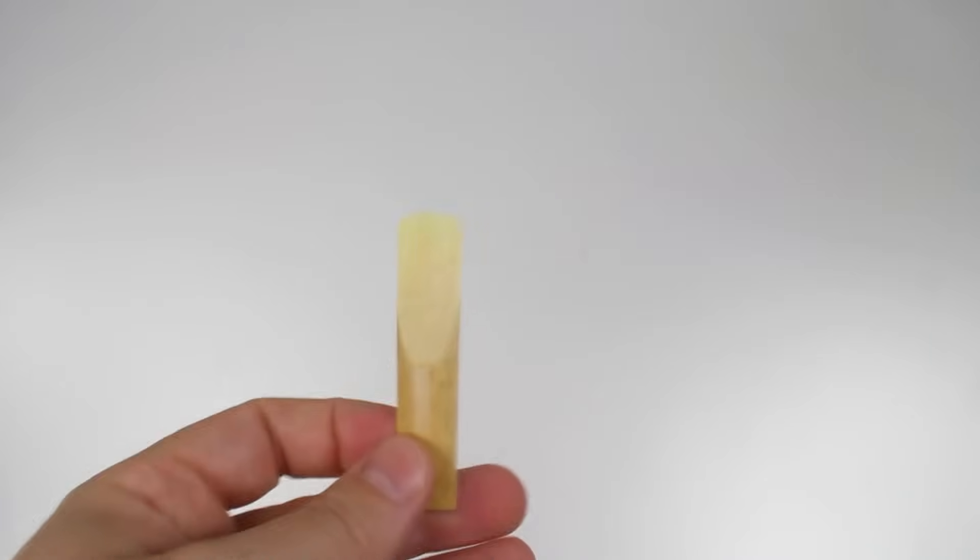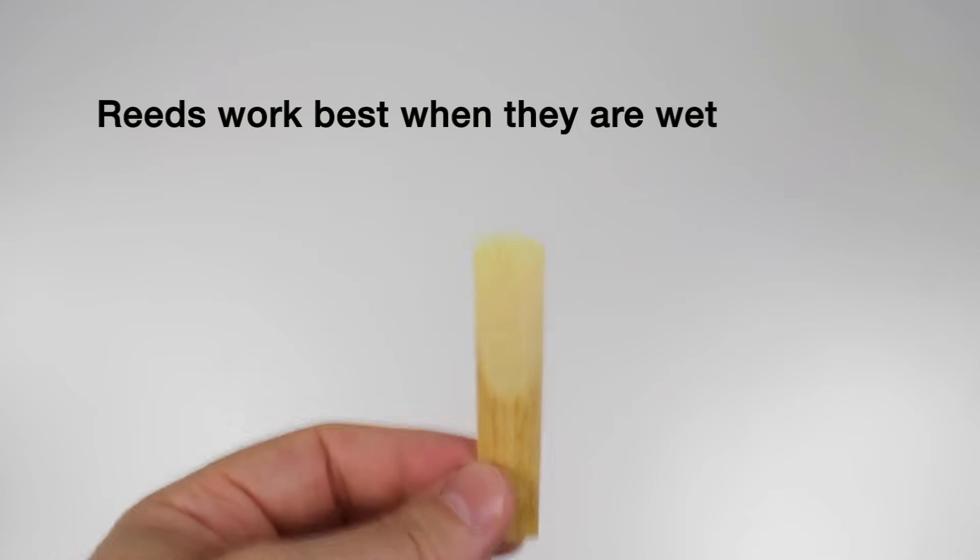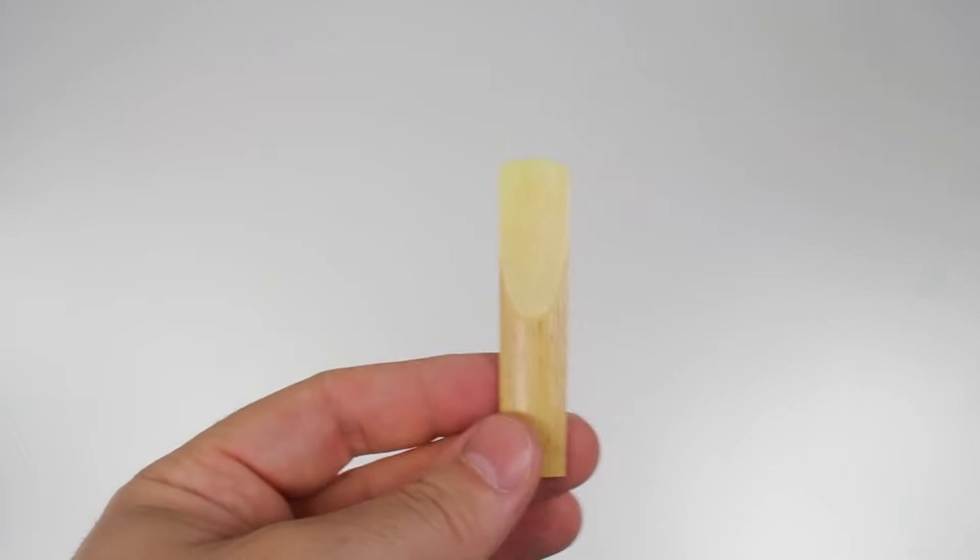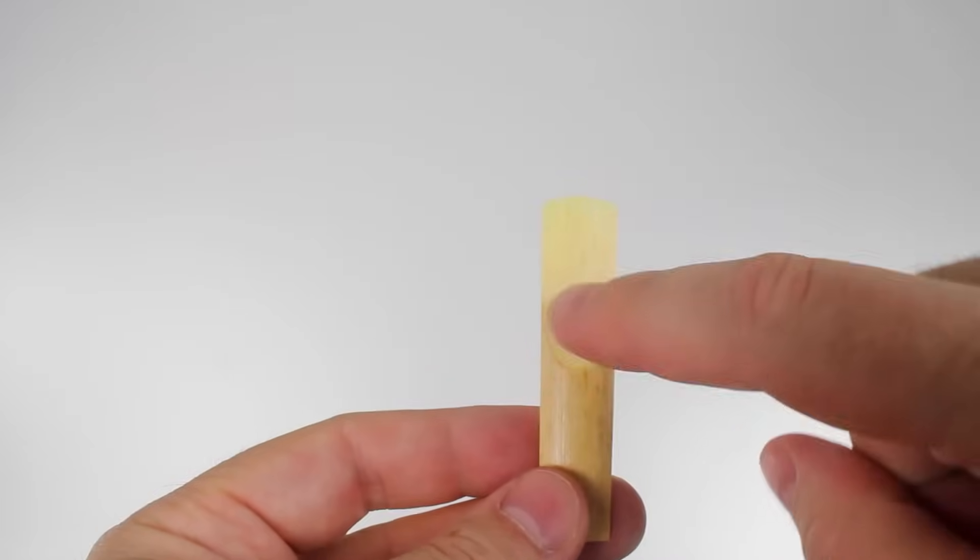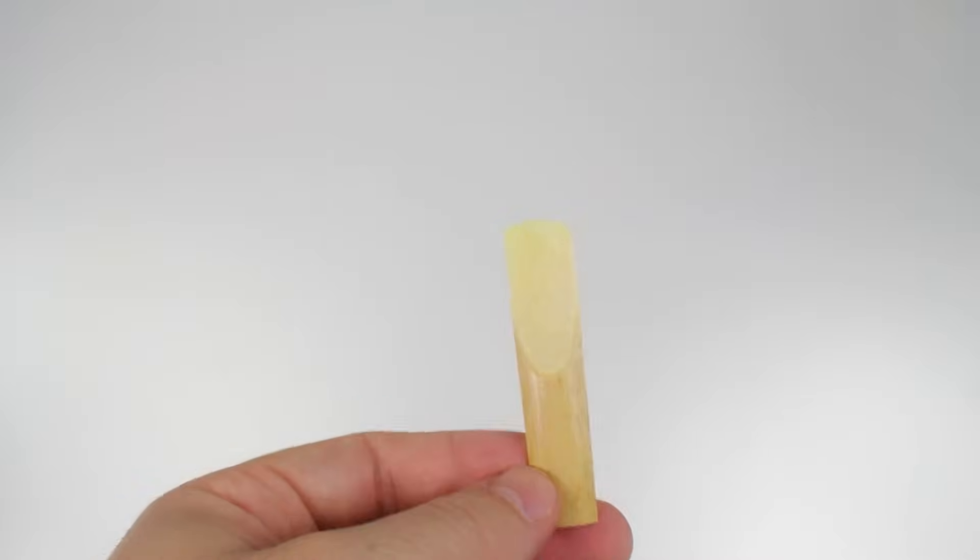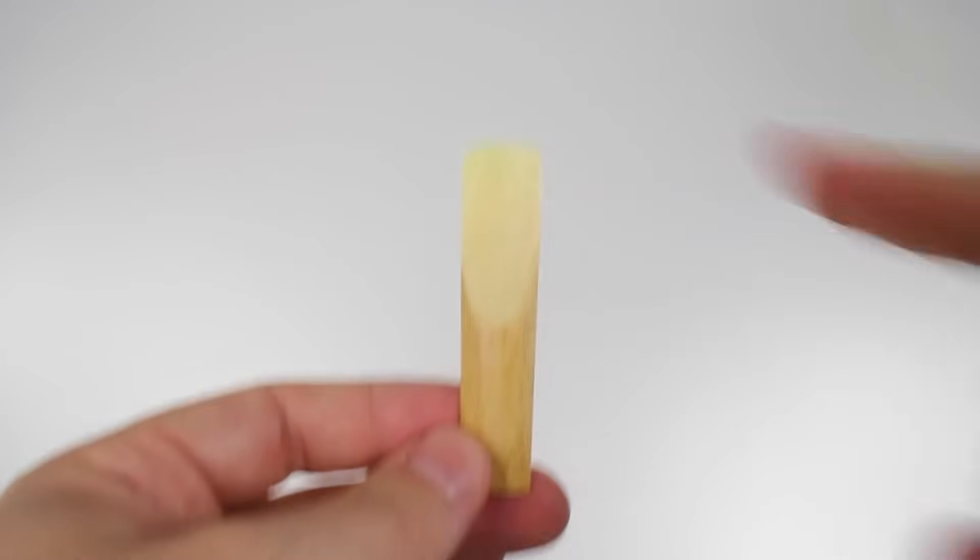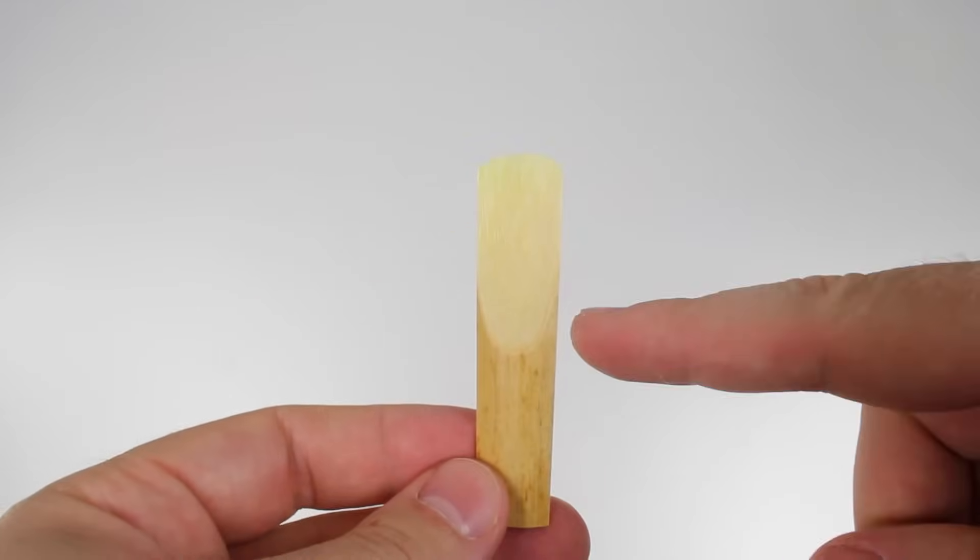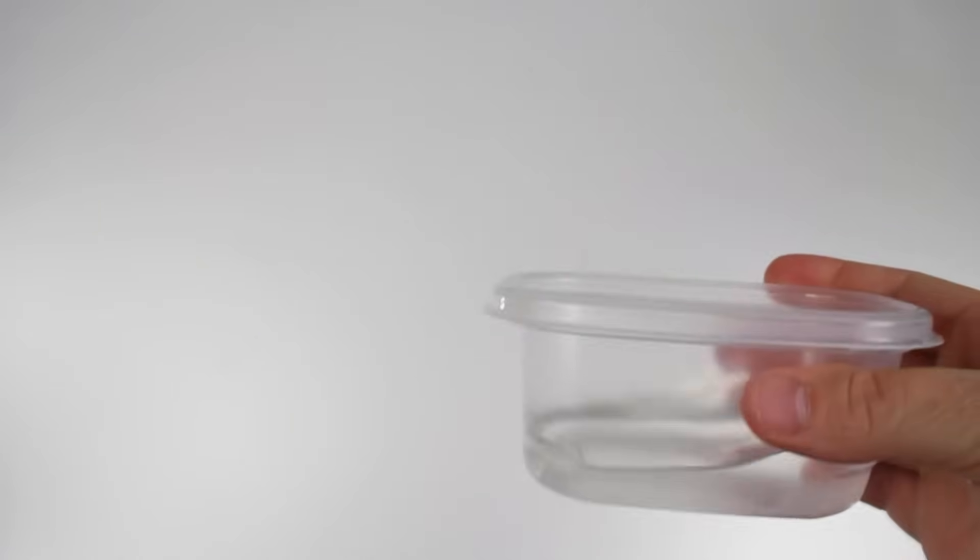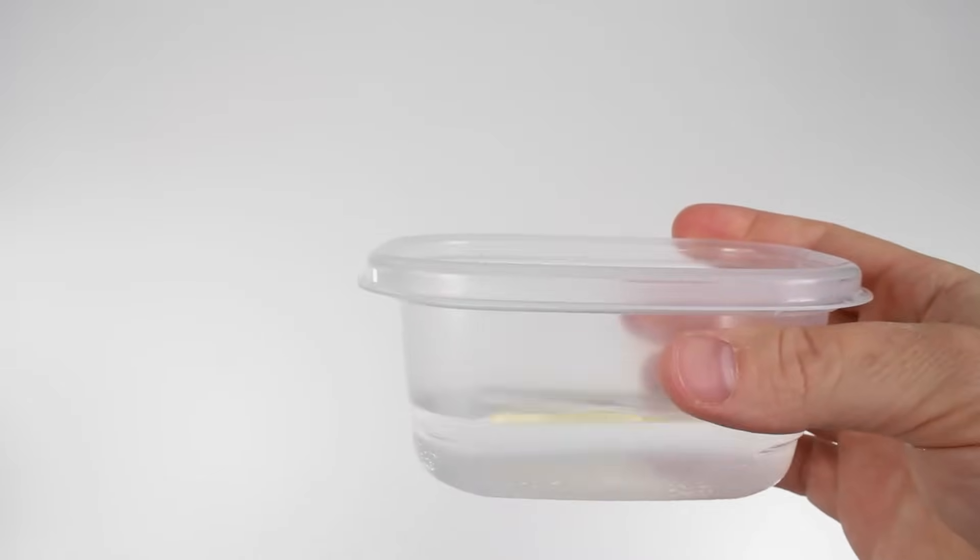And the final thing we're going to learn about reeds is reeds work best when they are wet. So the first thing we do when we're putting our instrument together is you place the reed in your mouth. Place the thin end of the reed in your mouth up to about this point. So this part should be sticking out of your mouth, and you hold it there while you put your instrument together. Don't put the entire reed in your mouth. Place the thin end of the reed in your mouth just up to where this bark starts here. If you don't want to put the reed in your mouth, you can use a small container of water like this and just set the reed in there to soak while you put your instrument together.